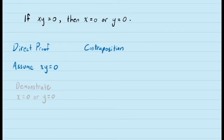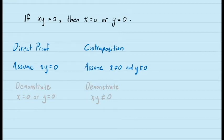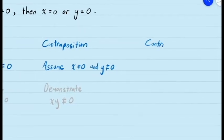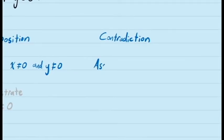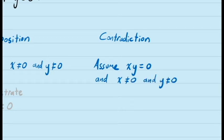In a proof by contraposition, we'd get an assumption about x and y individually, making it easier to combine them by multiplication into a statement about xy. But the statements we'd get are only that x and y are not 0, which tells us nothing about what they actually are, so it doesn't tell us much about what the product may or may not be. In a proof by contradiction, however, we get to assume that xy is 0 but x and y individually are not — which solves our problem because we can now use their inverses.